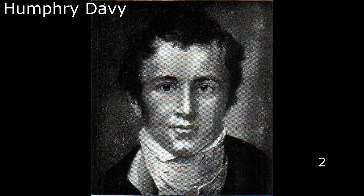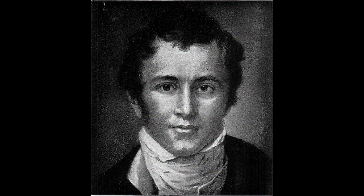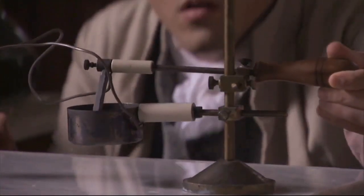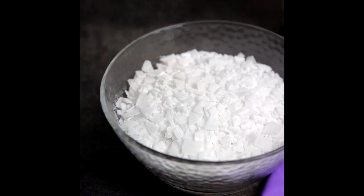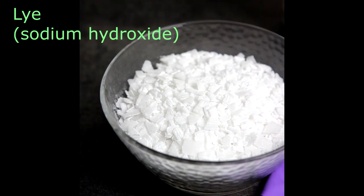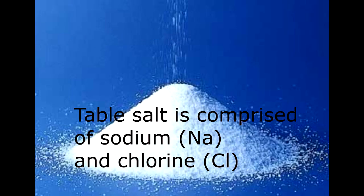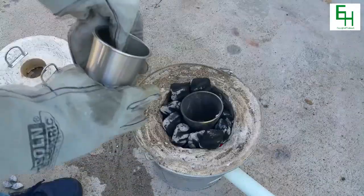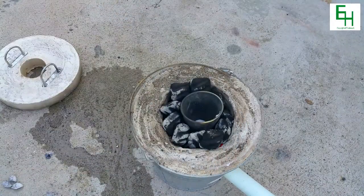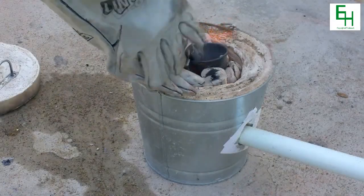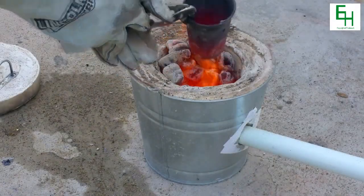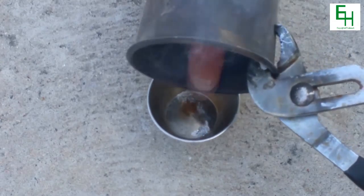And it was this man, Humphrey Davy, who perfected and used this process called electrolysis to discover potassium and sodium. He first discovered potassium by applying electrodes to moistened potash, which came from wood ash. He also applied the same technique to moistened lye to produce sodium. Later on, he was able to melt table salt when he increased the temperature of the salt to over 800 degrees, and when he applied electrodes to the melted salt, he discovered that it was also made of sodium.